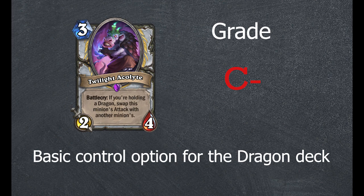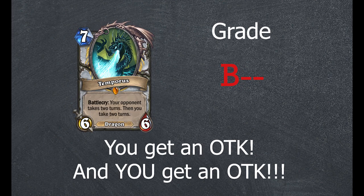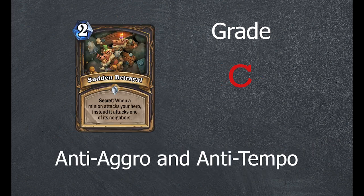Slow but potentially quite powerful. Basic control option for the dragon deck. Very strong card for dragon and OTK decks. You get an OTK! And you get an OTK! This card could be terrifying with the right synergies. Anti-aggro and anti-tempo. Anti, anti, anti.